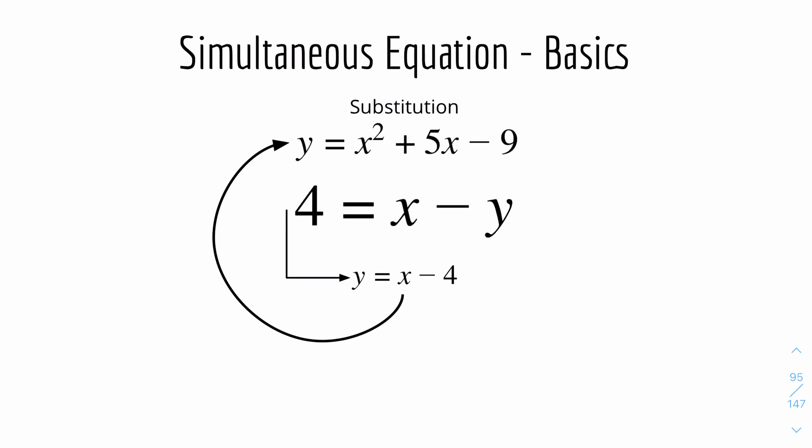We'll now look into substitution. Let's say we have two equations. Number one, we have y equals x squared plus 5x minus 9. Number two, we have 4 equals x minus y. What we would normally do is minus the top and bottom equations to cancel out a term. But that doesn't work here because there's a square and it's a quadratic equation.